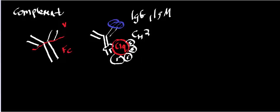The main portion is the C1Q, which is the one that ultimately binds to the FC portion of the antibody. It has two C1Rs and two C1Ss that are initially inactive. What happens first is when C1Q binds to the FC portion, it changes conformation and this activates one of the C1Rs. Through a serine protease mechanism, this C1R activates its partner C1R. Once both C1Rs are activated, they go and activate the C1Ss.